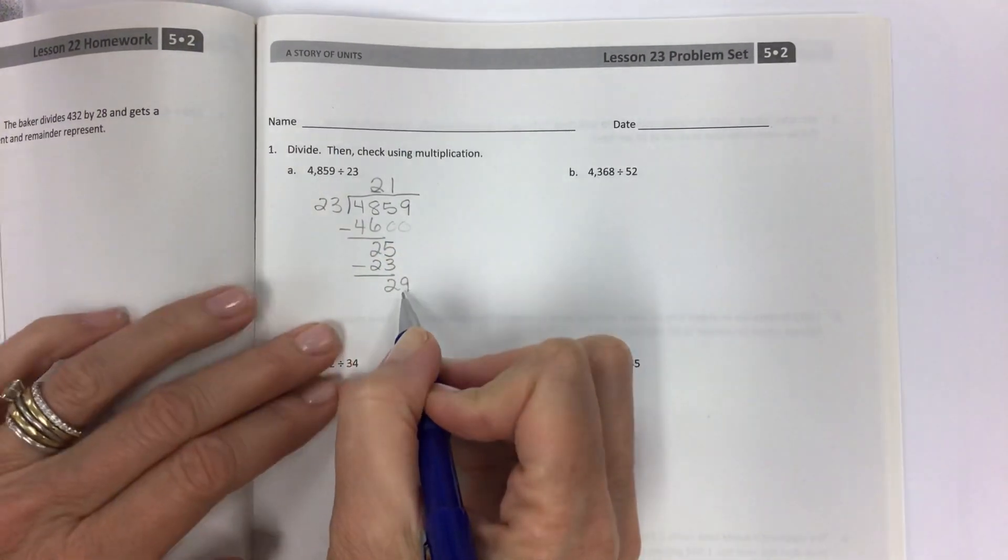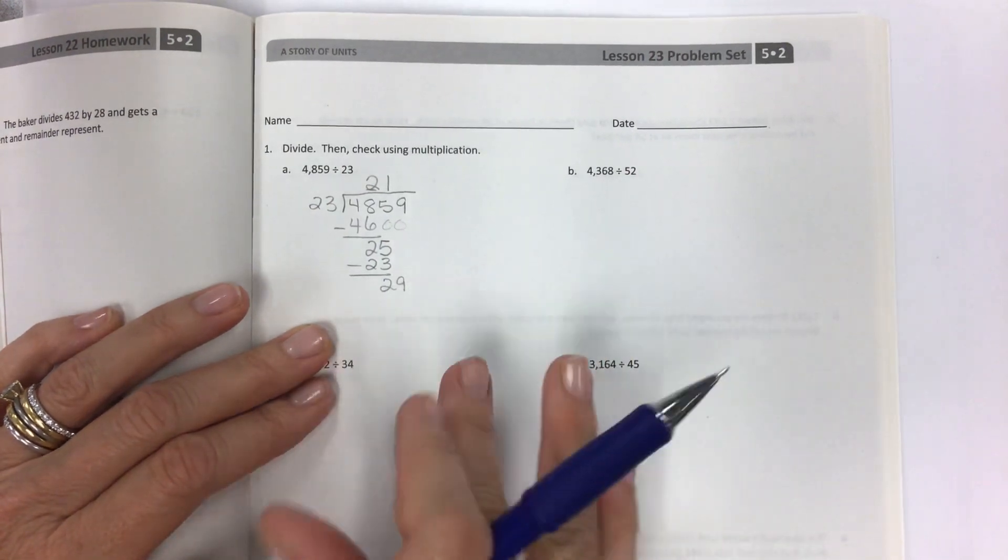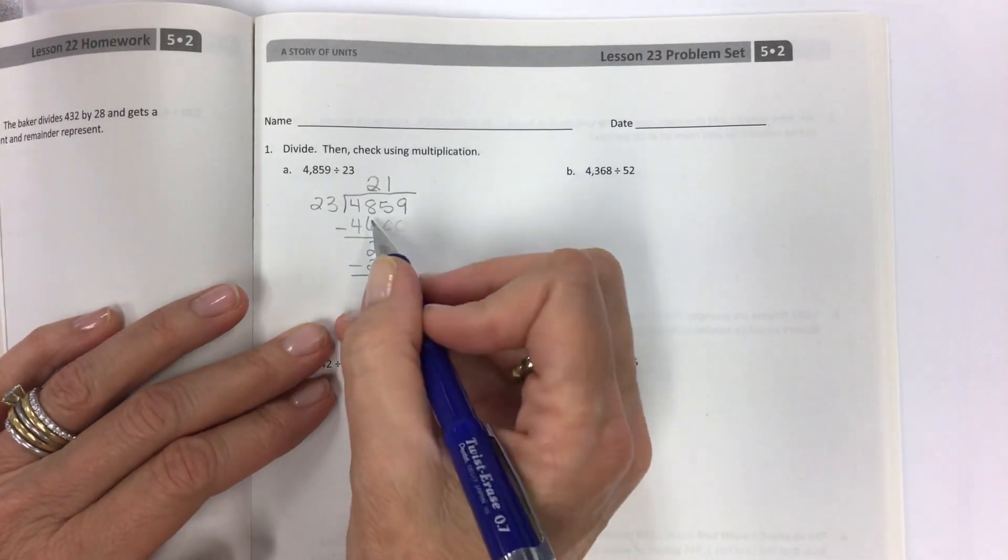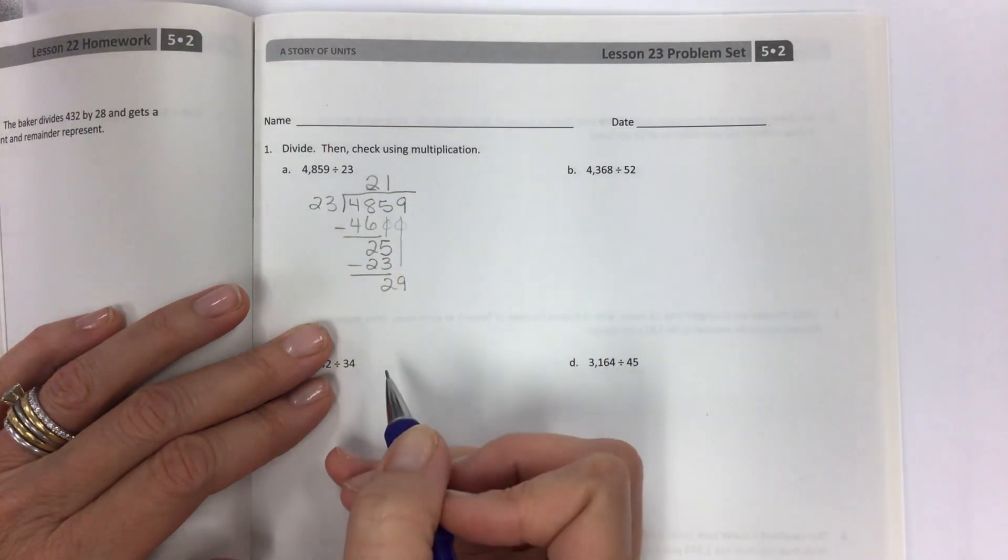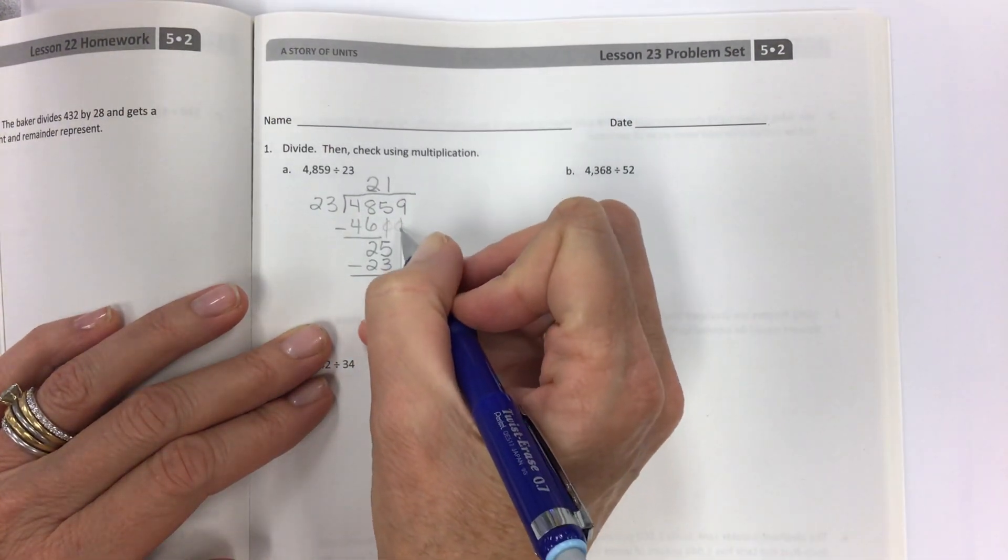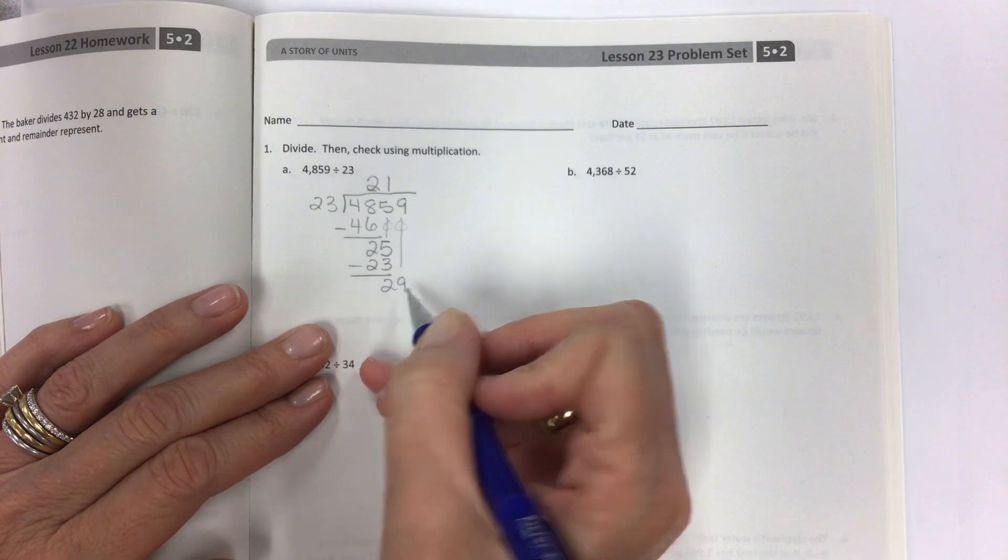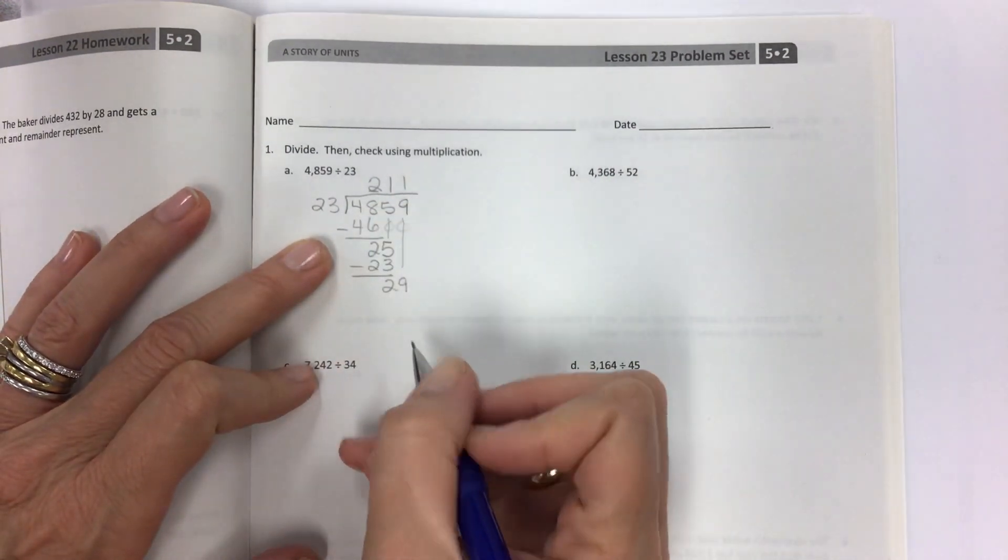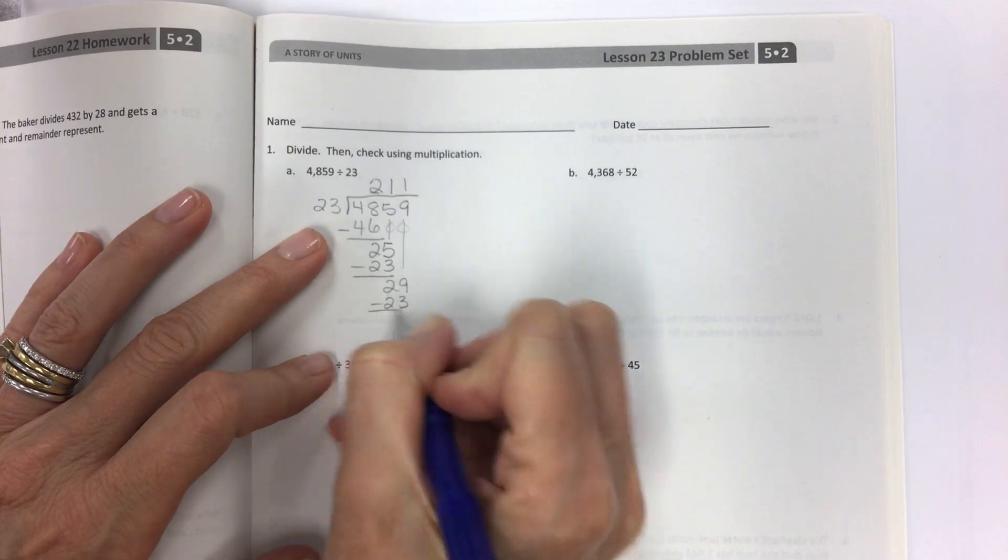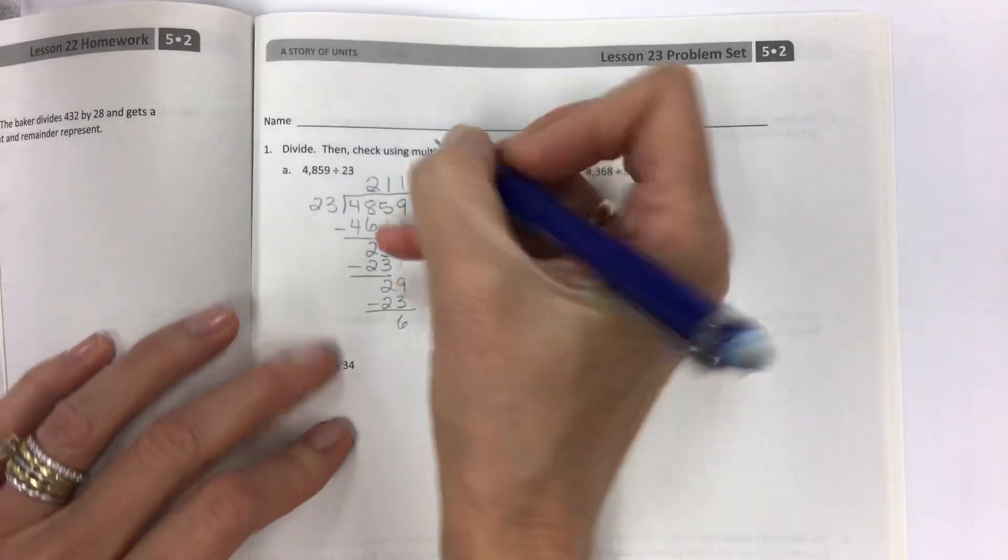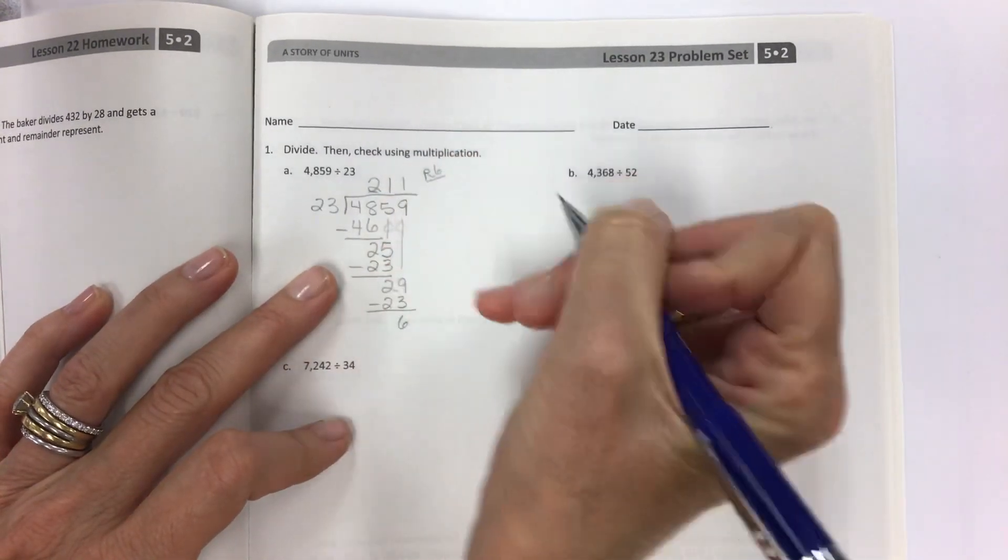Divide 25 by 23. You can get 1 in there. Multiply, 23. Subtract and get 2. Bring down your next place value position. In these larger problems, the biggest challenge is really just keeping track of where these numbers are going. Don't get lost. 29 divided by 23 is 1. Multiply, get 23. Subtract and get 6.